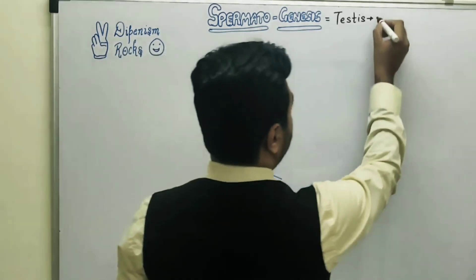These PCG cells undergo repeated mitosis, and the cells formed are known as spermatogonia. So spermatogonia are formed by repeated mitosis. This is the first stage, known as the M phase, that is the multiplication phase.